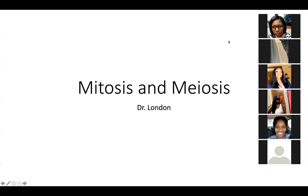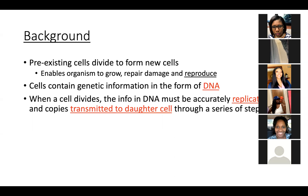Alright, so mitosis and meiosis. We're going to look at mechanisms for cellular division in both prokaryotic and eukaryotic cells. Just a little background — we've talked about the cell, its structure, and how all living things are made up of cells. One of the postulates of the cell theory states that the cell is the basic unit of life and that all cells arise from pre-existing cells. Today we're going to look at how pre-existing cells divide to form new cells.